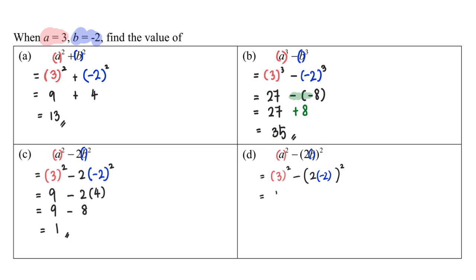3 times 3 is 9 minus - I'm going to do the inside first - 2 times negative 2 is negative 4. Therefore, 9 minus negative 4 squared is positive 16. So 9 minus 16 equals negative 7.